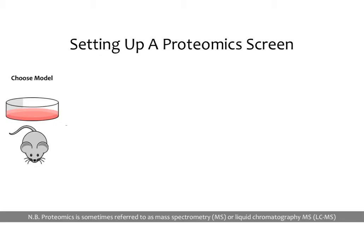Now that we understand what a proteomics screen is, let's talk about how to set it up — it's very similar to other experiments we've discussed. You're going to choose a model of interest and expose it to some sort of control and experimental condition. For models, we can use cells, animals, or human tissue samples — basically anything you could make protein out of can be sent for a proteomic screen.